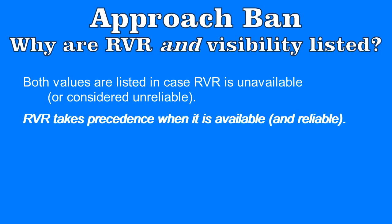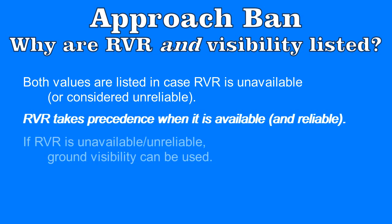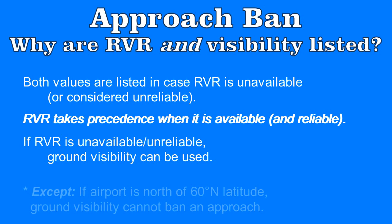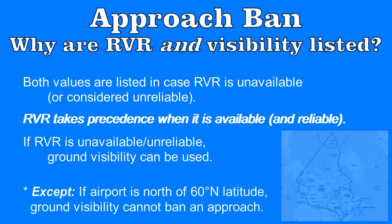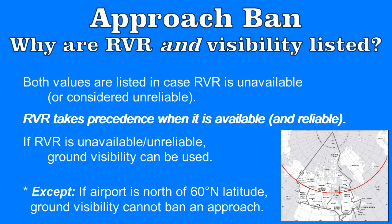However, if the RVR is unavailable or considered unreliable, visibility can be used to enforce the approach ban. Except — and here comes one of many exceptions — for airports north of 60 degrees north, ground visibility will never impose an approach ban. This is because way up north there are so few airports around that ground visibility reports are not always reliable, and the alternates are very far distant.